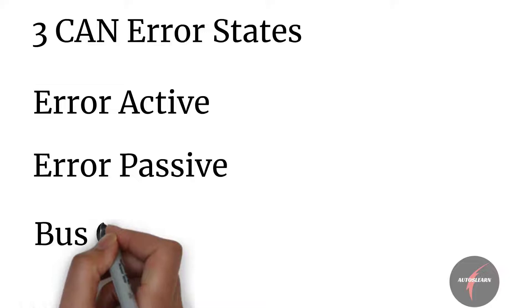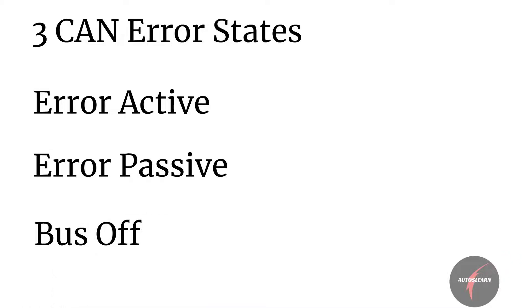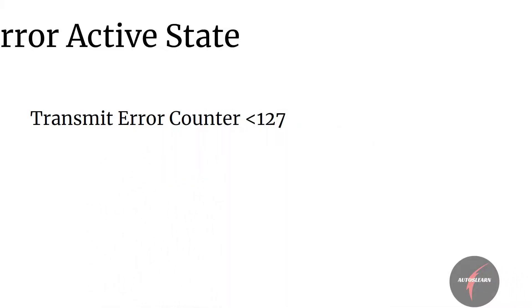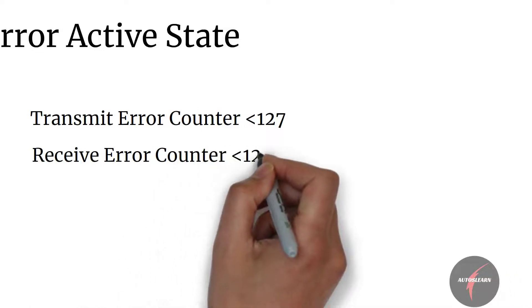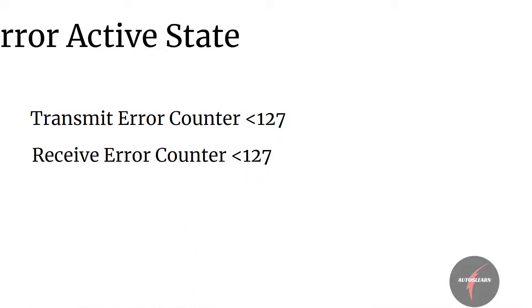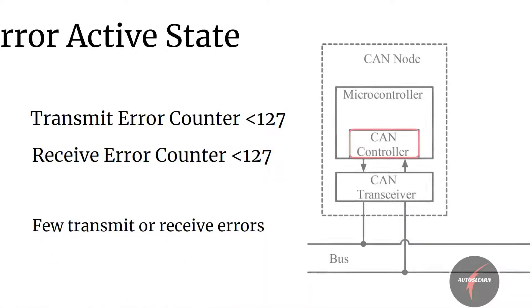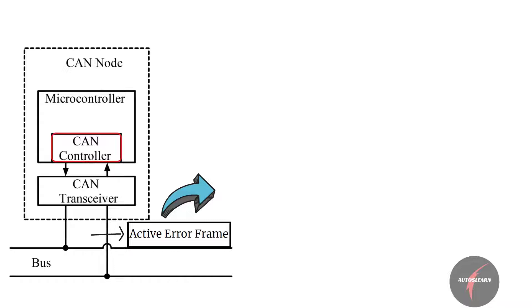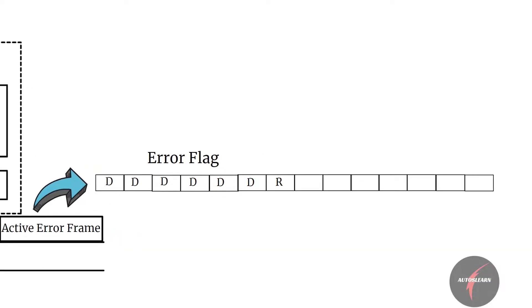There are three CAN error states: error active, error passive, and bus off. The error active state is activated in a node when the transmit error counter is less than 127 and the receive error counter is less than 127. If the node identifies at least a few transmit or receive errors, it will send out an active error flag indicating other ECUs that there seems to be some error in the message transmitted or received. In this state, the error-detected ECU will send an error flag containing six dominant bits followed by eight error delimiter bits.